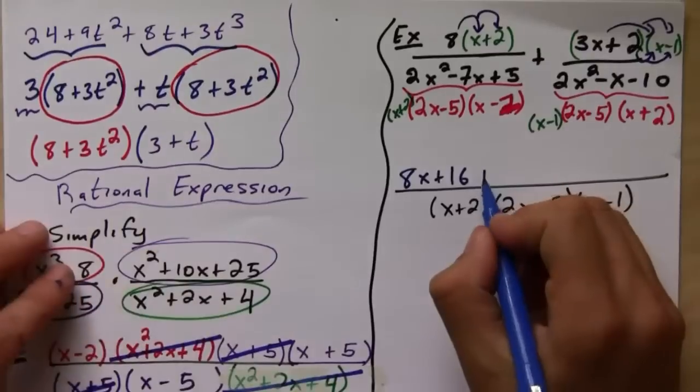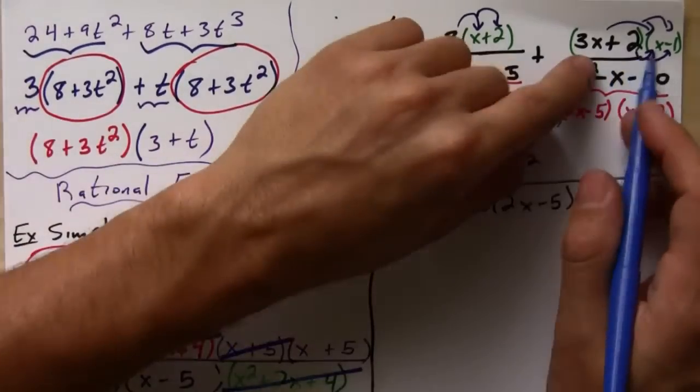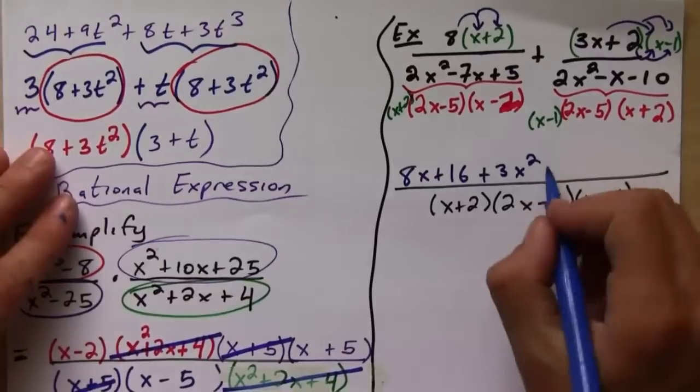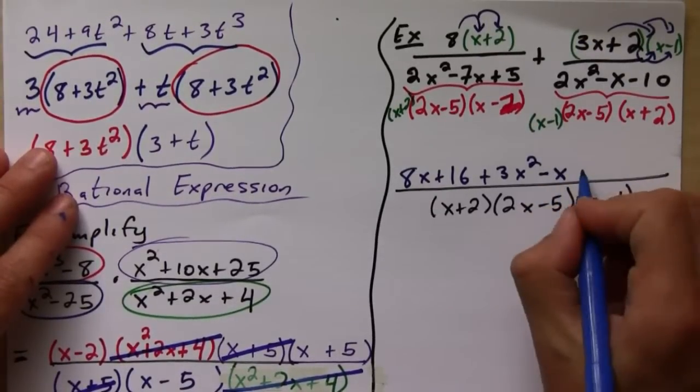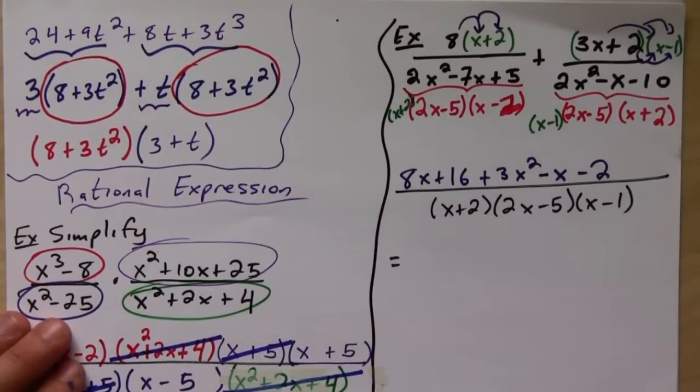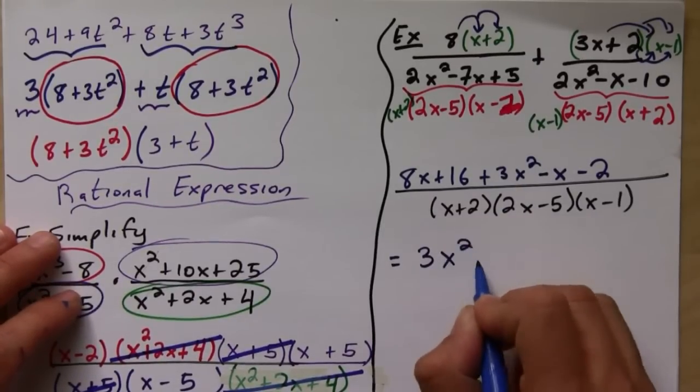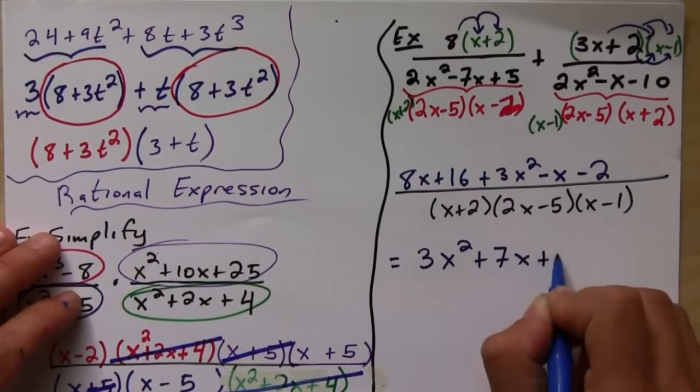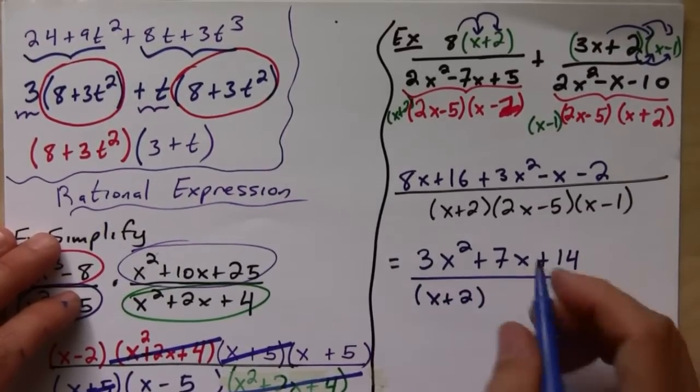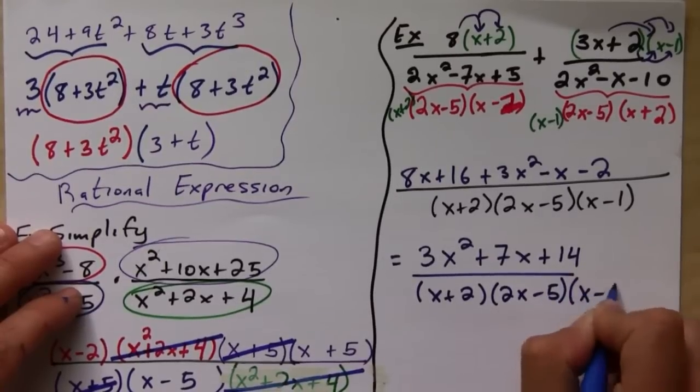And so this will give us a plus 3x squared. Let's do this the fast way. This is going to be minus 3x plus 2x, which is going to be minus x, and then minus 2. And so then what we end up getting, if we combine like terms, we're going to get 3x squared plus 7x plus 14, all over x plus 2, 2x minus 5, x minus 1.